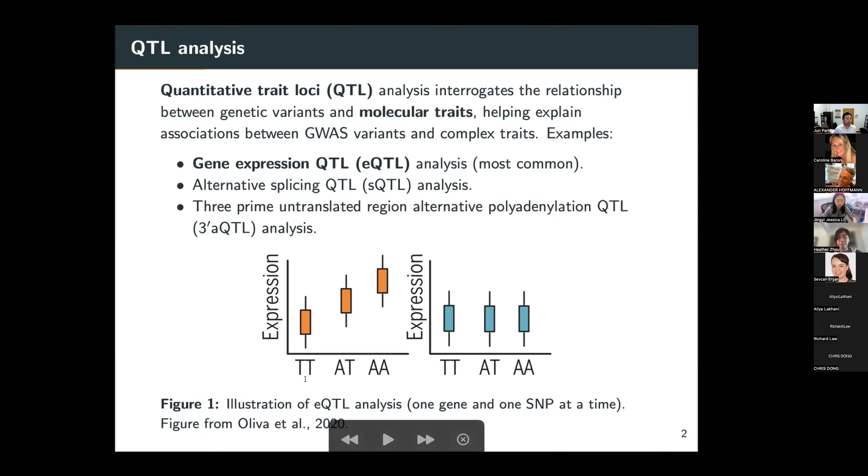So this image taken from a published work illustrates the basic idea of EQTL analysis. The standard practice is to look at one gene expression level and one SNP at a time across a number of individuals. On the x-axis, we have the genotype at one SNP for the different individuals, and the y-axis represents the gene expression levels measured in those individuals. On the left-hand side, we can see visually that there is an association